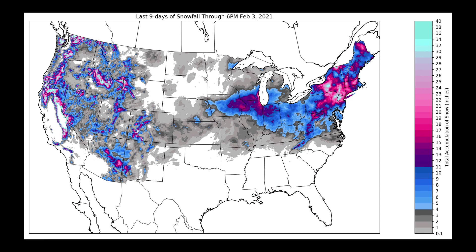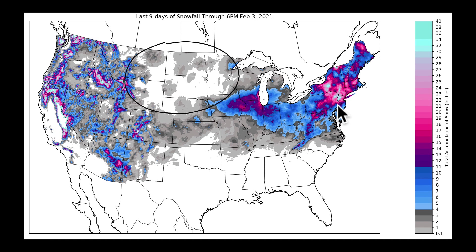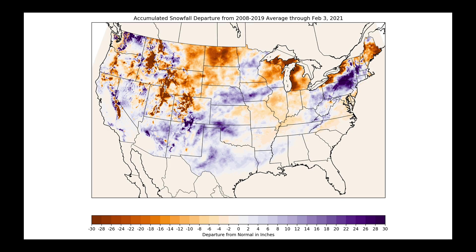Looking at the last nine days of snowfall: much of the snow on this map came from one system. It hit the west coast hard first, bringing in some places in the Sierra Nevada over 120 inches of snow. It then reformed in the Midwest bringing snow into this area, then became our nor'easter with some places in New York, New Jersey, and back into Pennsylvania seeing significant accumulations. The northern plains have been in a bit of a snow drought when looking at total accumulated snowfall departure from average.